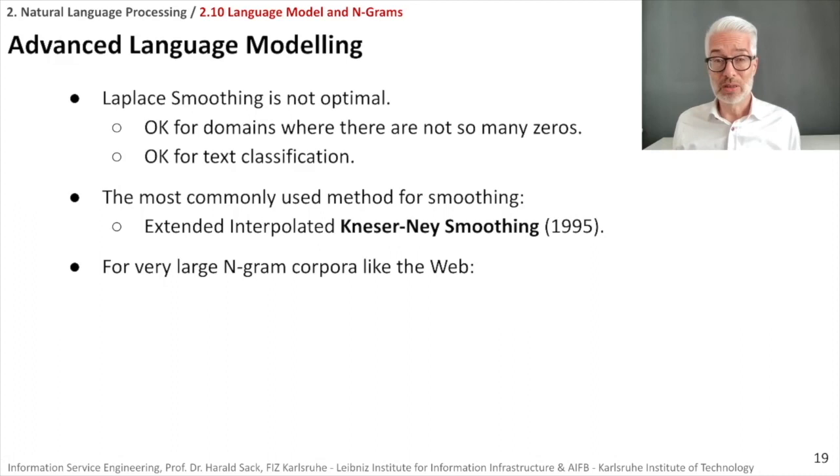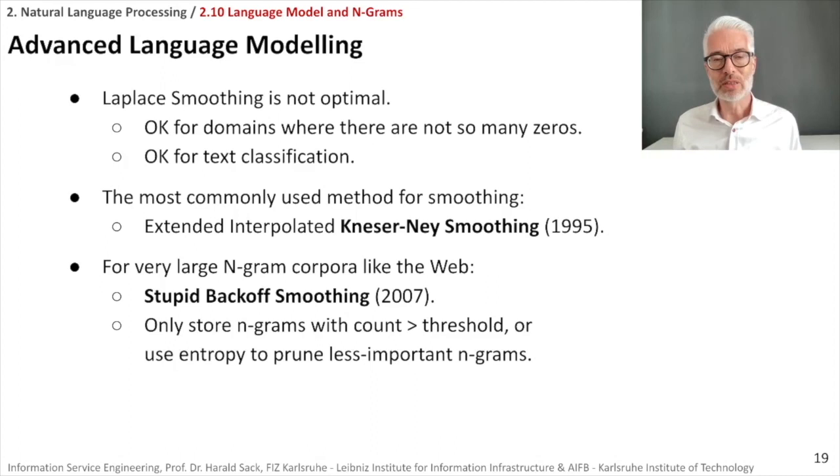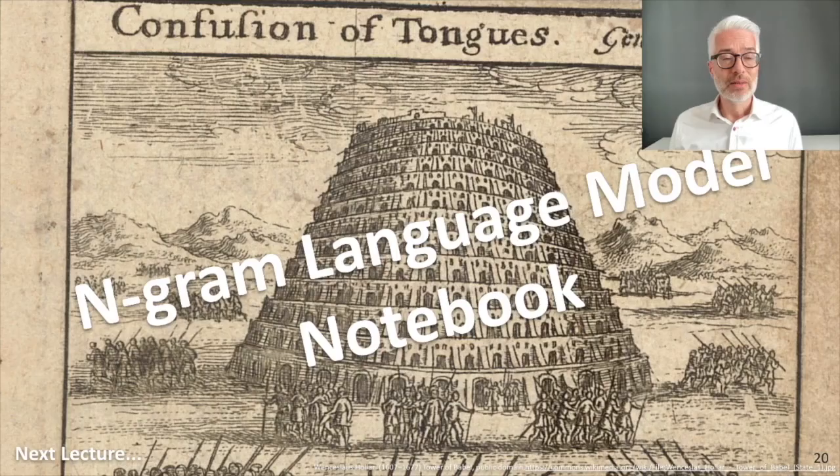What you do then for rather large corpora where you simply would have to make too many calculations or too many probabilities for an n-gram model. There is a stupid backoff method which means we filter out lots of stuff that had to be computed. And one of the possibilities you can do there is, for example, you store only n-grams with a count that is larger than a given threshold. Or you use entropy to prune less important n-grams. So you make the size of the n-grams you are using here smaller. But we won't go deeper into that in this lecture. If you are interested, simply look into the references. Then you can go much deeper into this advanced language modeling.